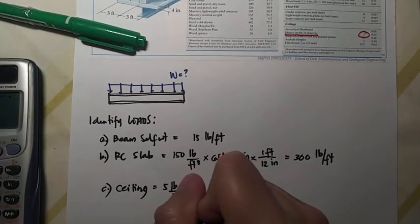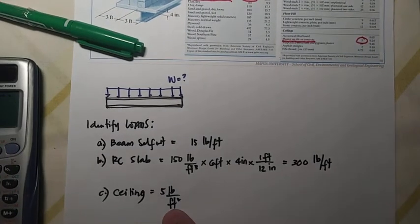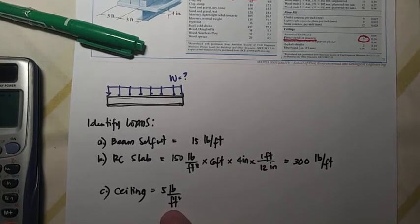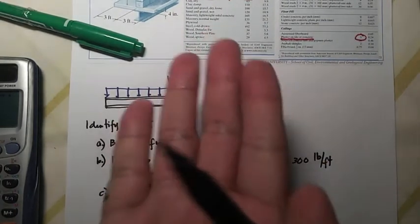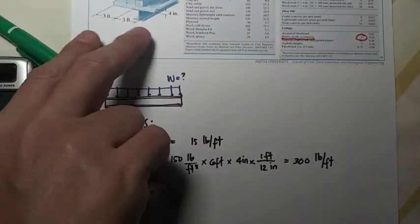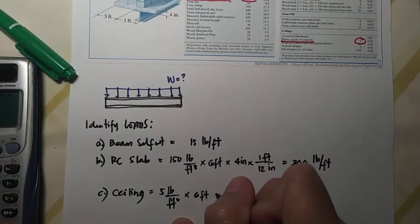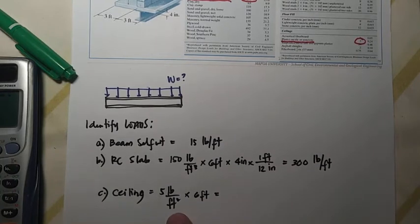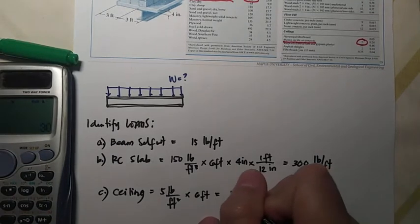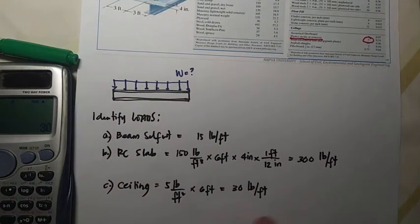So we have 5, take note that the unit of 5 is PSF, pounds per square foot. To make this pounds per foot, we multiply since plastering, the plastering is the surface, the bottom of the ceiling. So we need to multiply it with the width which is 6 feet times 6 feet, so cancel one feet, what is left is pounds per foot. So 5 times 6, that's 30 pounds per foot.